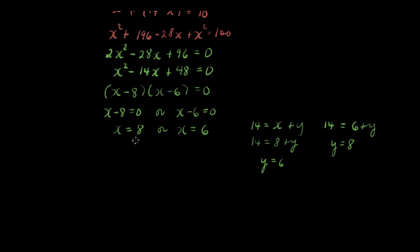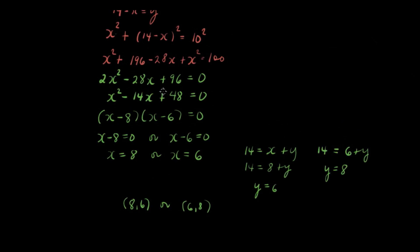So x is equal to 8, our solutions are 8, 6 or, we're able to get 8, 6 or 6, 8. This just means that our line intersects the circle at two points.